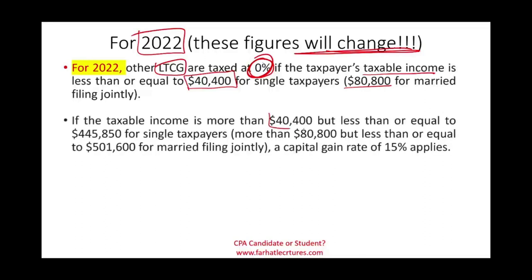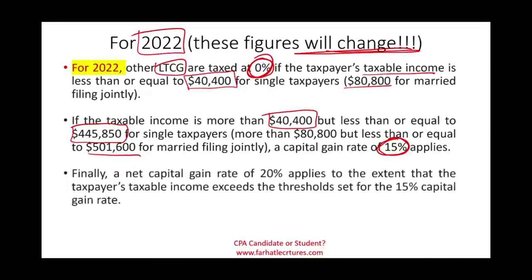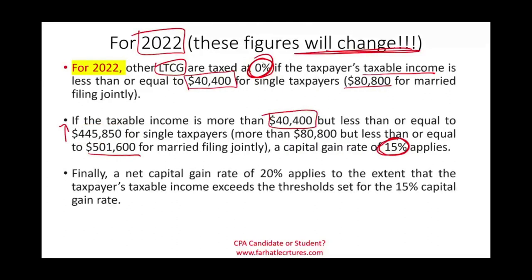If your taxable income is more than $40,400 up to $445,850 (single), you pay 15% on long-term capital gains. For married filing jointly, the range goes up to $501,600. If you make more than $445,850 (single) or $501,600 (married filing jointly), your long-term capital gain is taxed at 20%. Even though it's 20%, when you're in the half-million-dollar taxable income range and your ordinary rate is 37%, the 20% is still a significant preference.